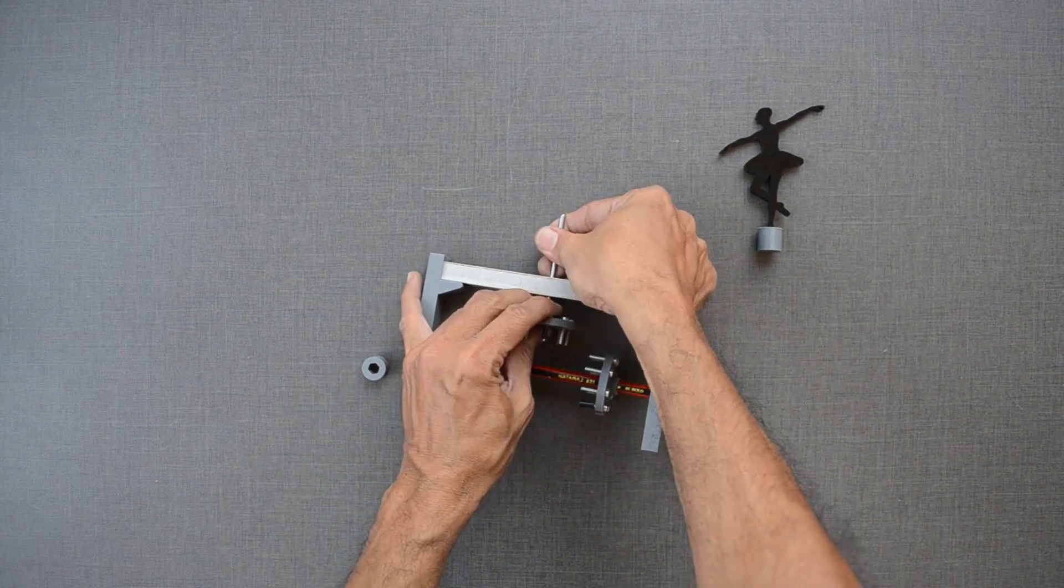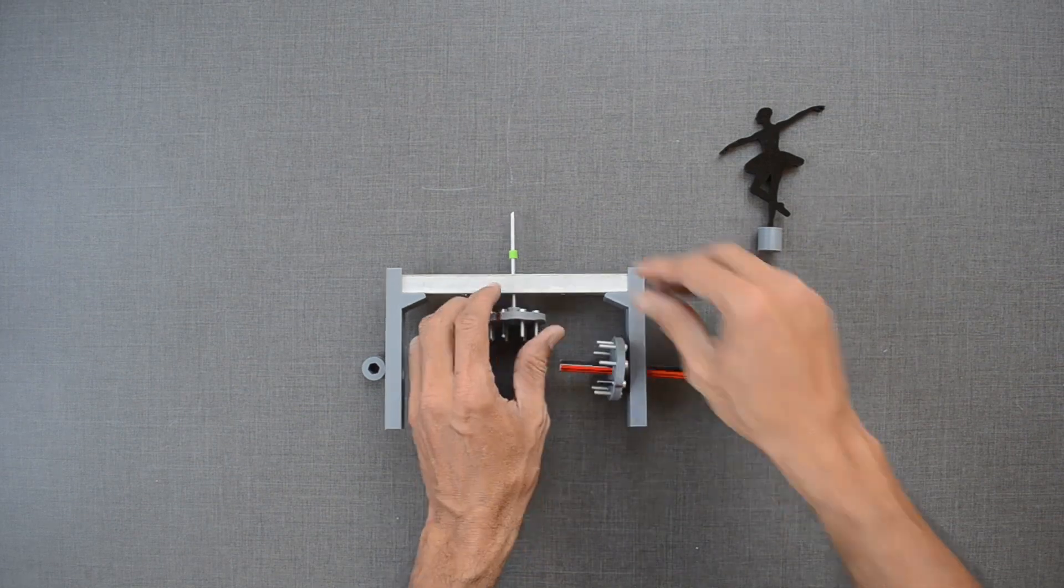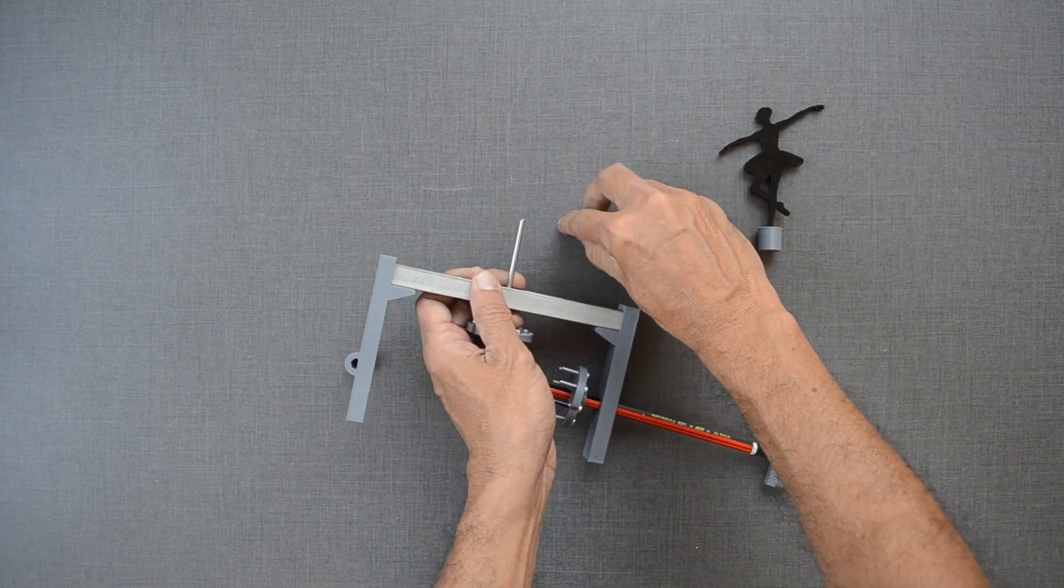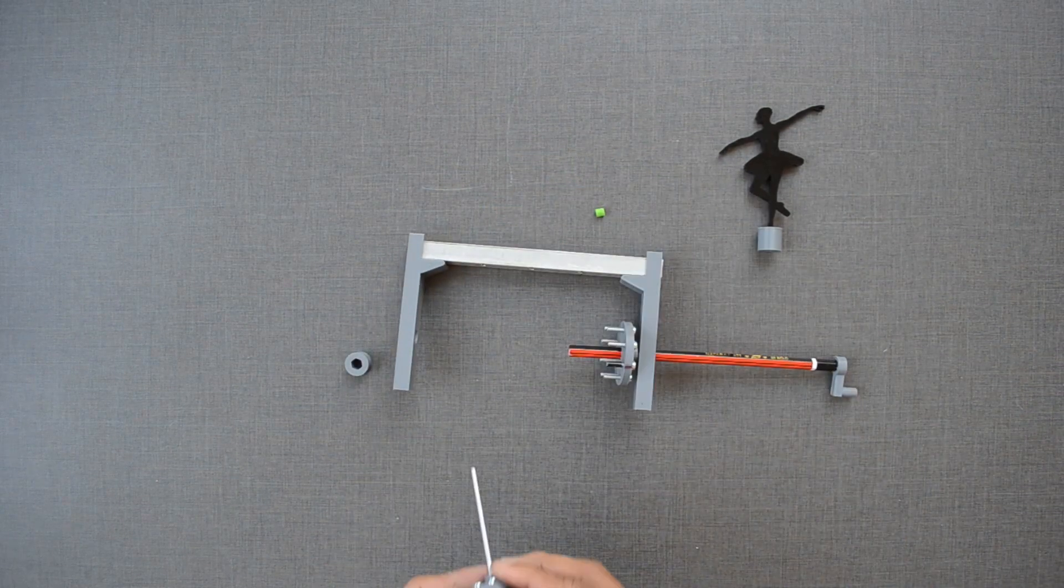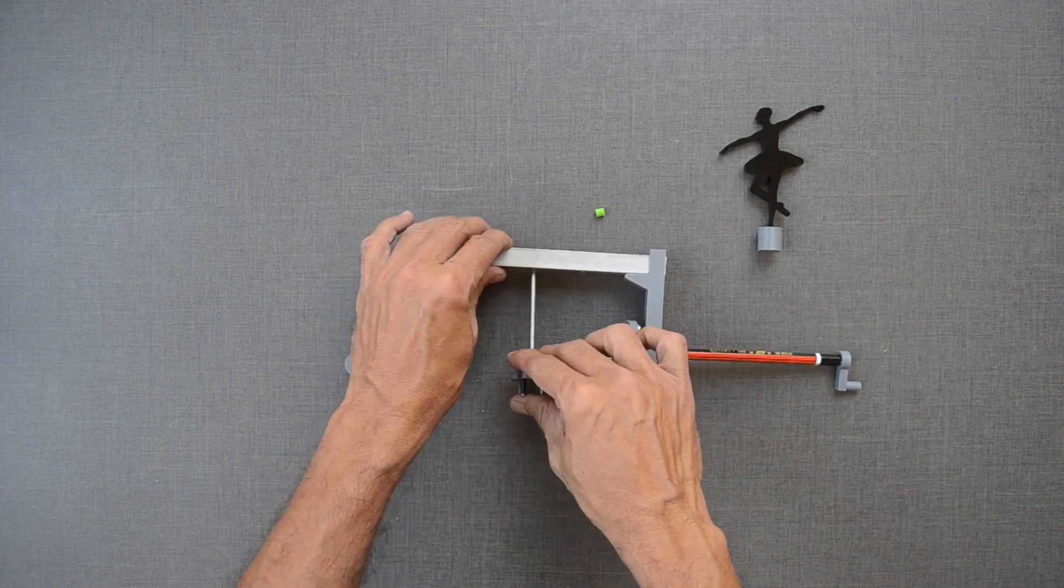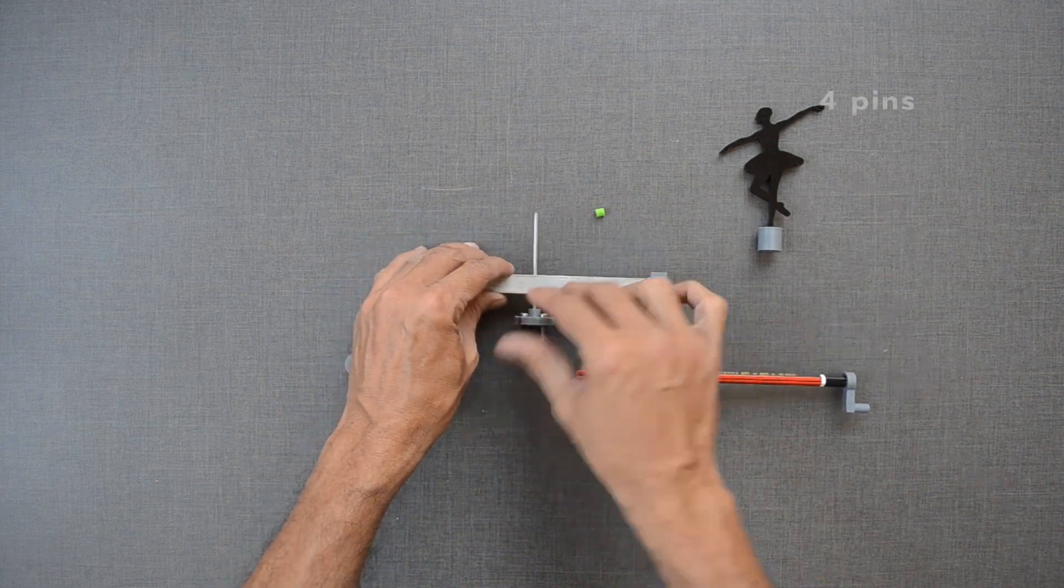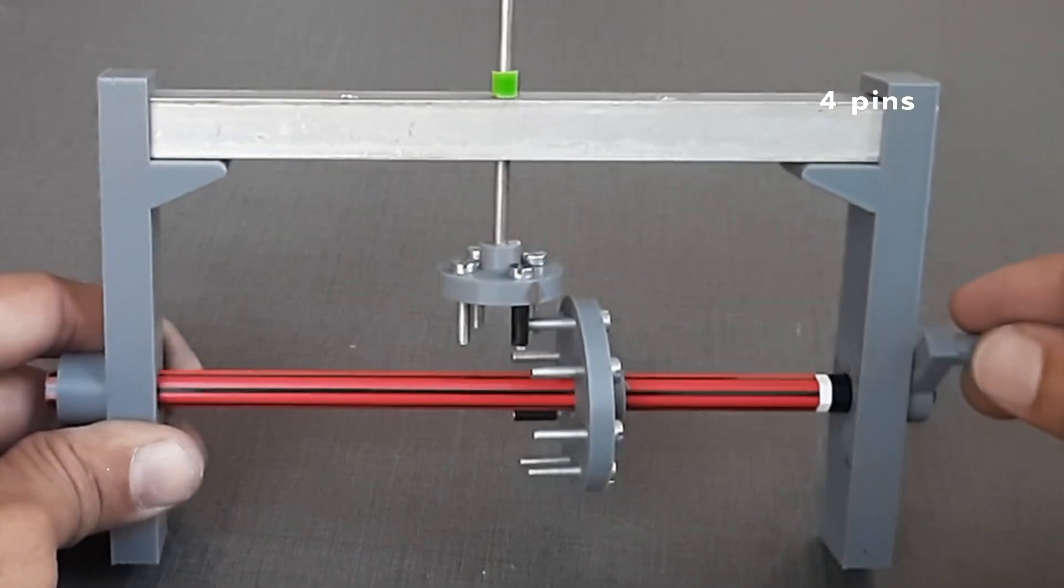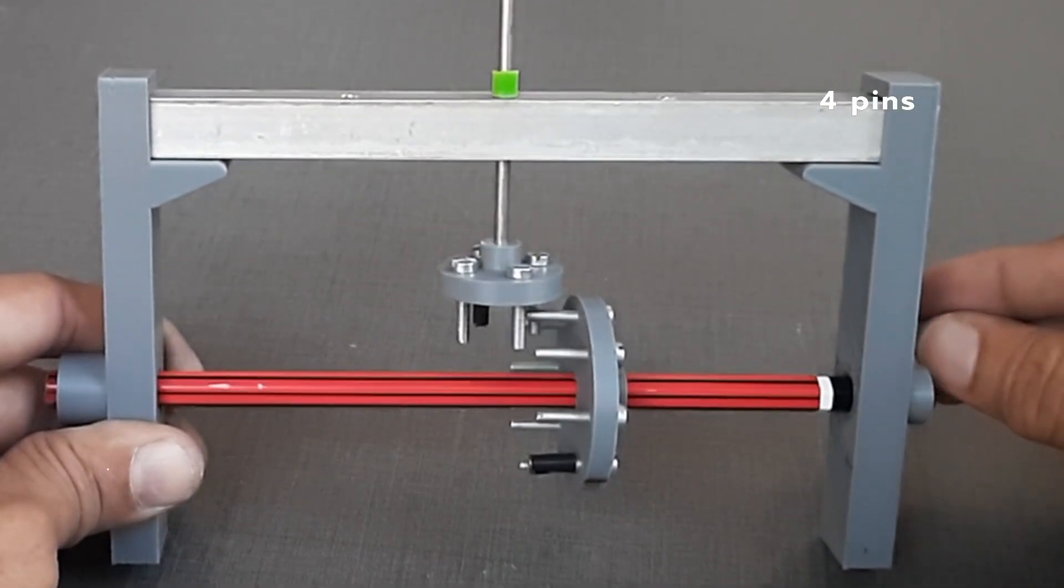How about replacing the follower wheel with 8 pins by the one with 4 pins? For every rotation of the driver wheel, the follower wheel makes 2 rotations.